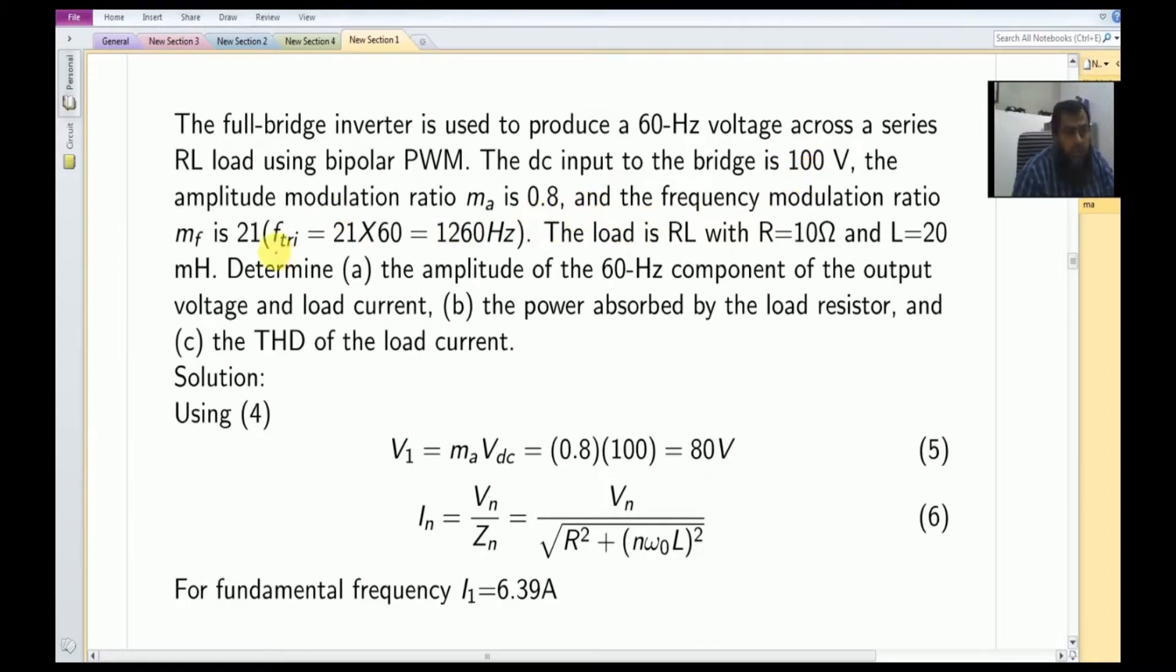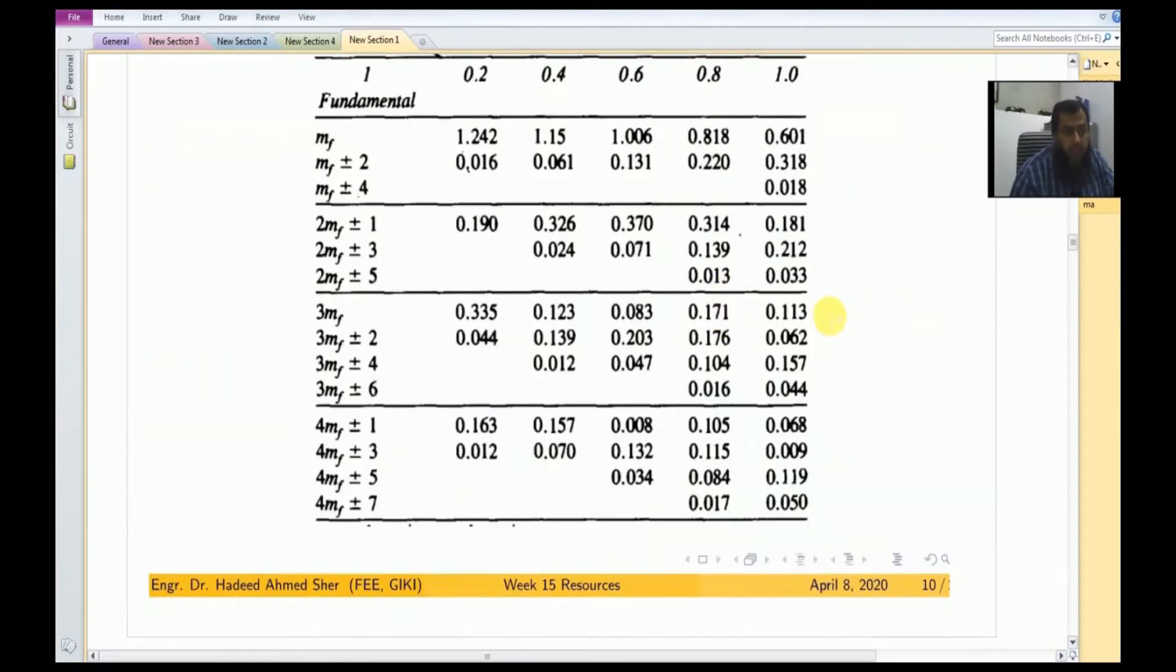The important thing is we need to set the F_triangle to be equal to 1260 Hertz. That makes MF equal to 21. With MF equal to 21, the multiple of the fundamental will appear at 1260 Hertz, at 1140 and 1380 Hertz.